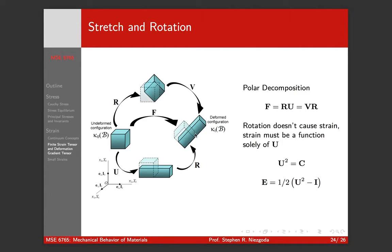Okay, back to this idea of stretch and rotation. Rotation doesn't cause strain. Our F, our total deformation gradient, includes both stretching the material and the rotation of the material. Now we can decompose that into rotation first—we spin our body and then we stretch it—or we can stretch first and then spin. This is called the polar decomposition.